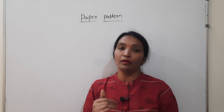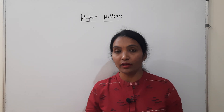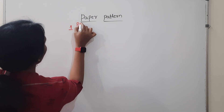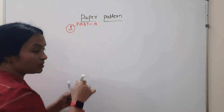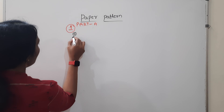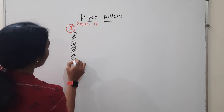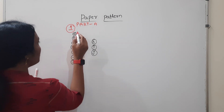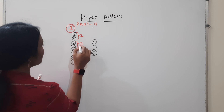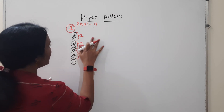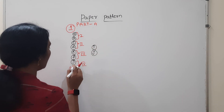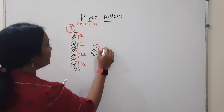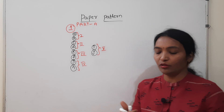I will tell you how to prepare for the pattern — where the paper starts and ends. Starting from Part A: questions A, B, C, D, E, F, G, H, I, J. The first two questions belong to the first unit, the next two belong to the second unit, the next two to the third unit, and G and H belong to the fourth unit, and I and J to the fifth unit.